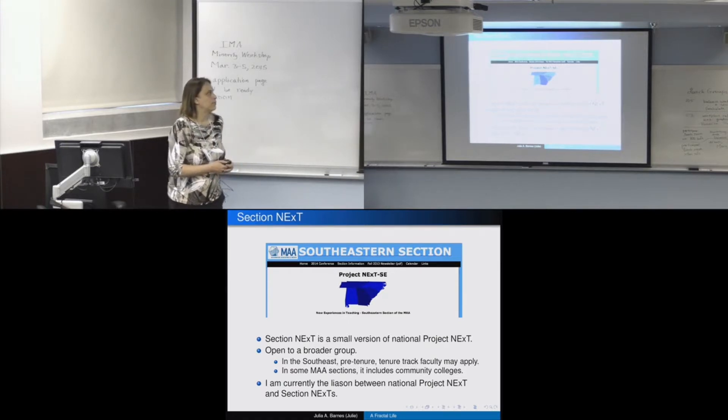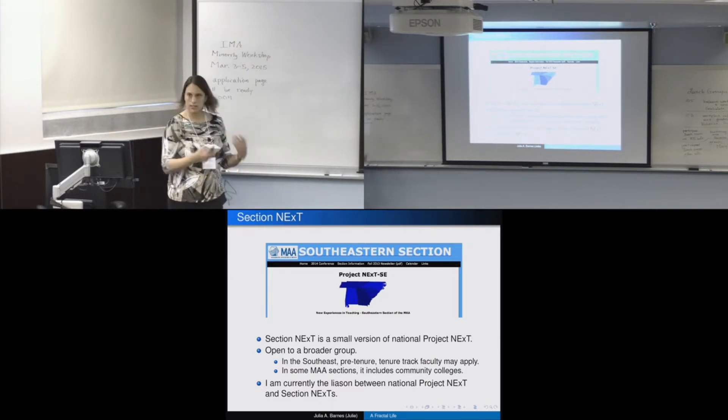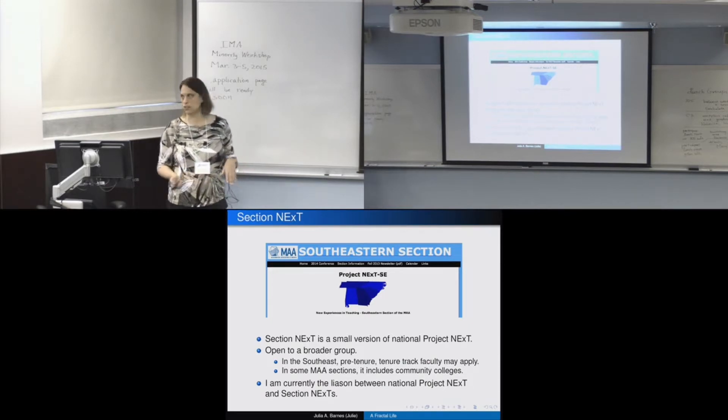I'm in the southeast section just a couple hours from here. And I was organizing neat teaching ideas sessions for the section next. So at least over half of the MAA sections have a section next program. And each one is a little bit different. But we have an active one in the southeast. And I also was one of the co-organizers for section next for three years. And section next are very much like the national program. They're smaller versions. And they're modified to deal with the needs of that section. So it's more open on who can apply. You don't have to be in your first two years. For southeast, you can apply if you're just simply pre-tenure. And then some of the smaller sections, like Rhode Island, includes community college people. So it totally depends on the section. And currently, I'm the liaison between national next and section next.